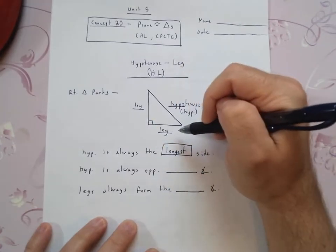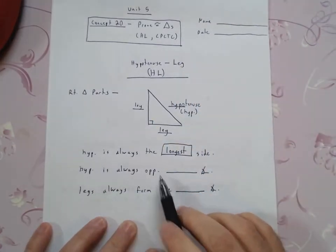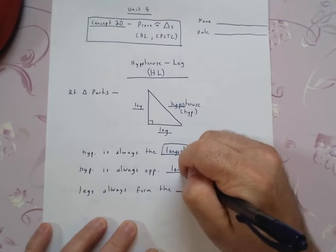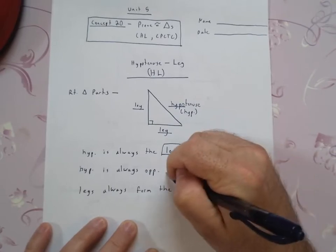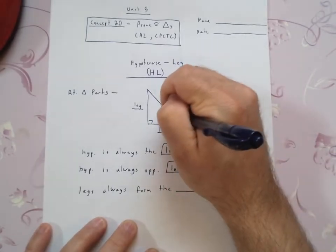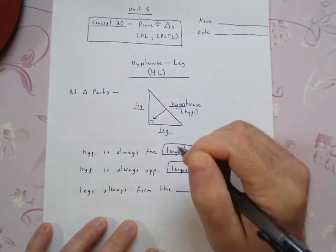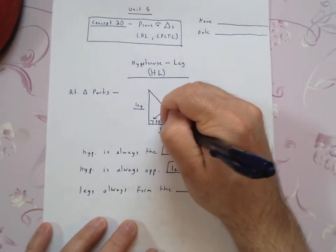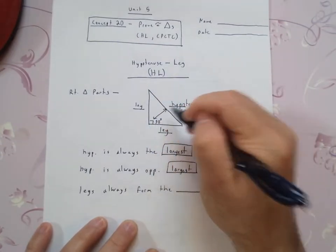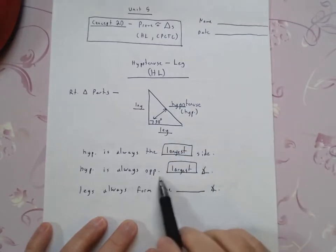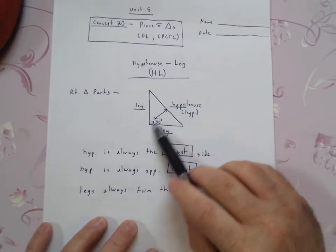The legs will always be shorter than it. The hypotenuse is always opposite the largest angle, which the largest angle on it is going to be this guy right there, the 90 degree.